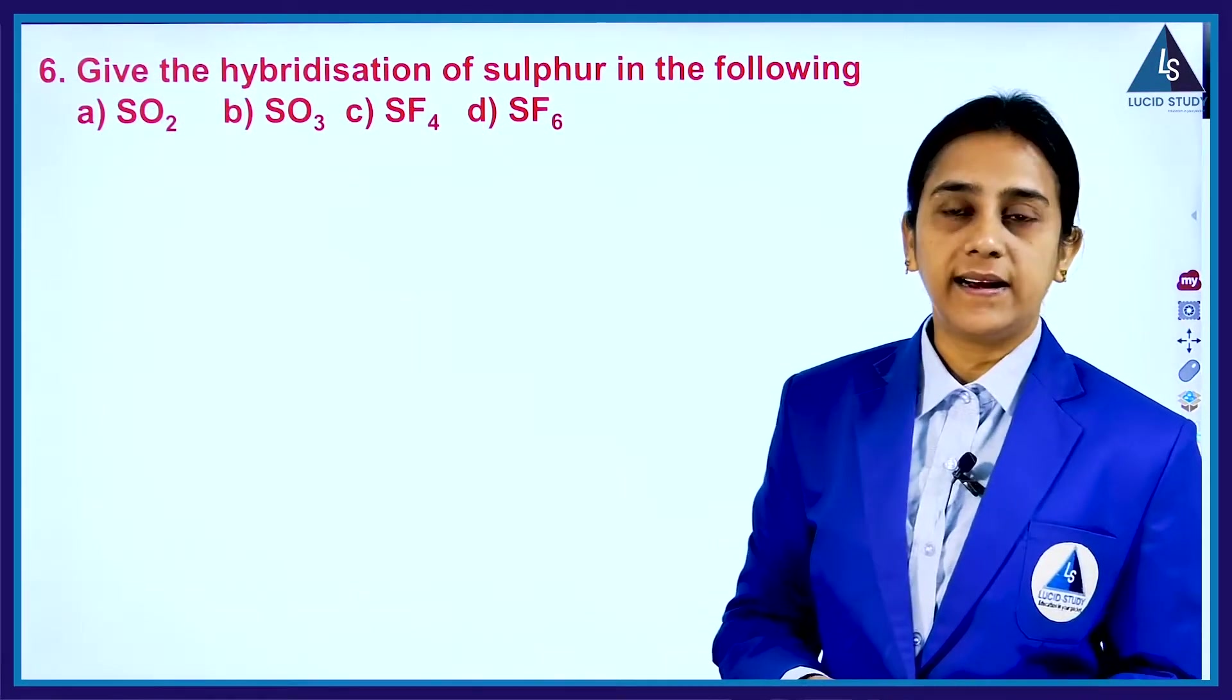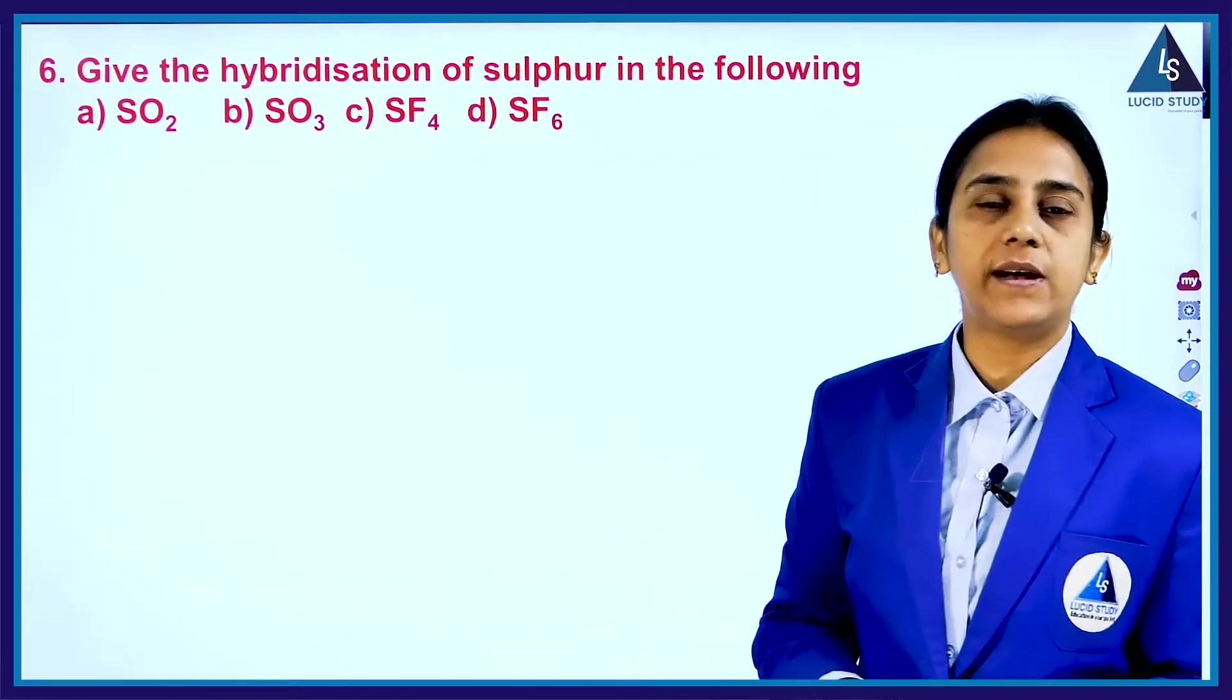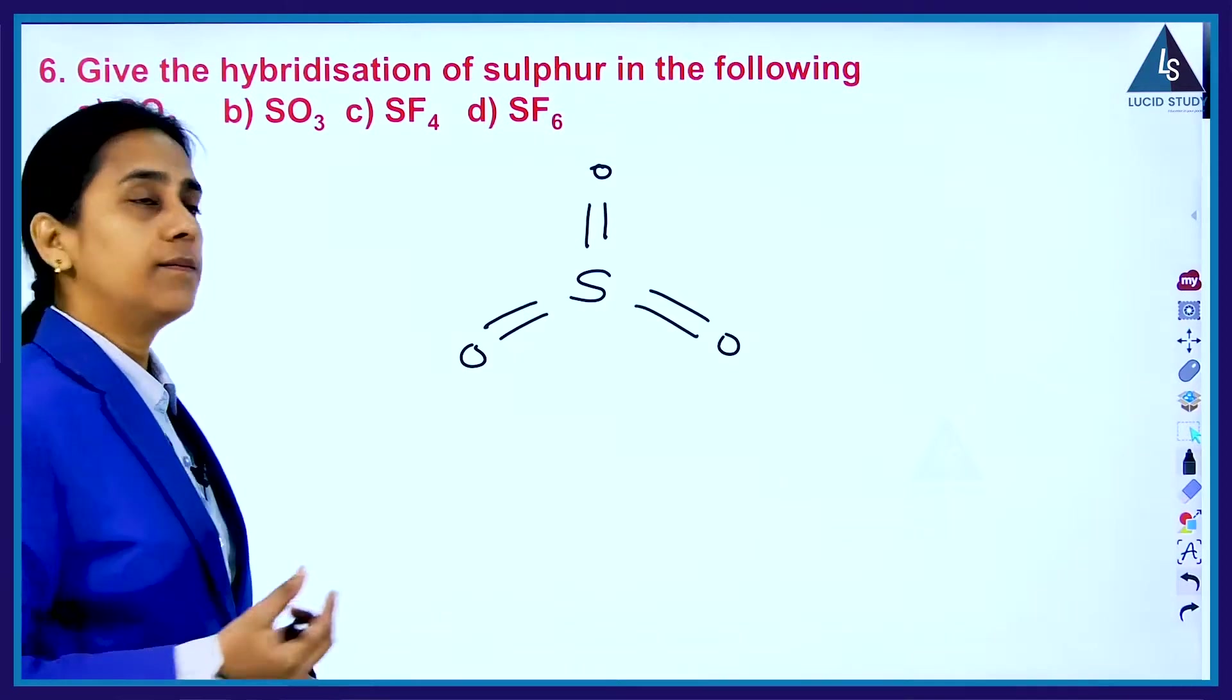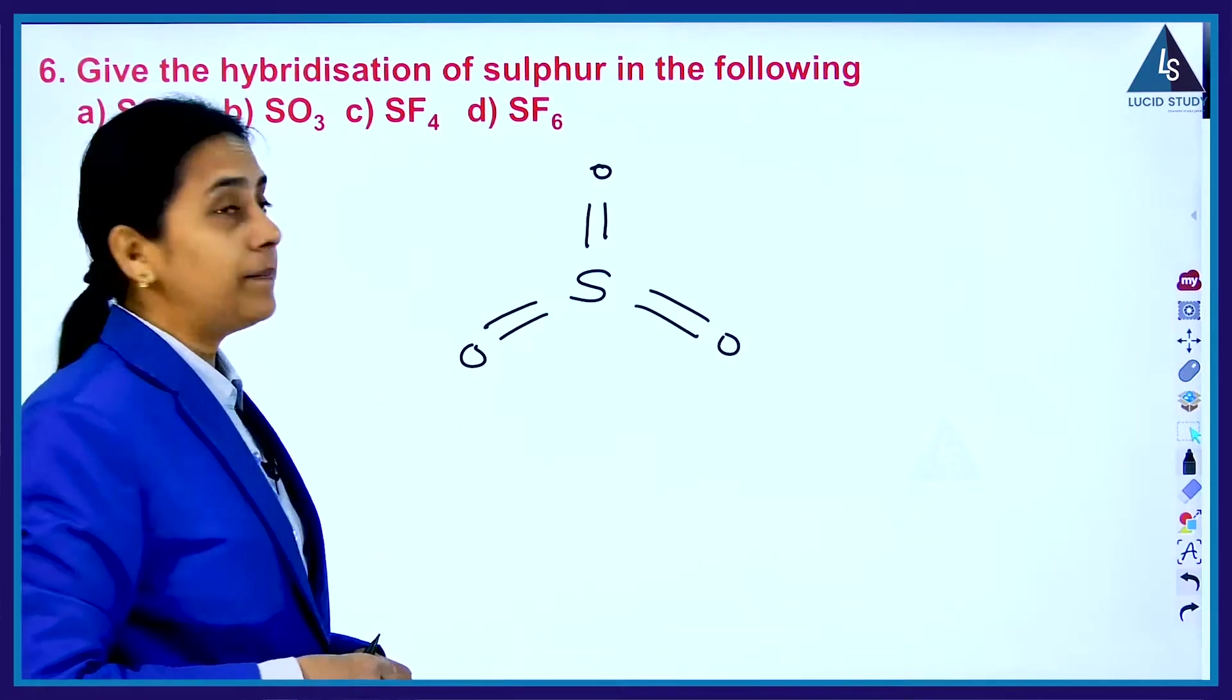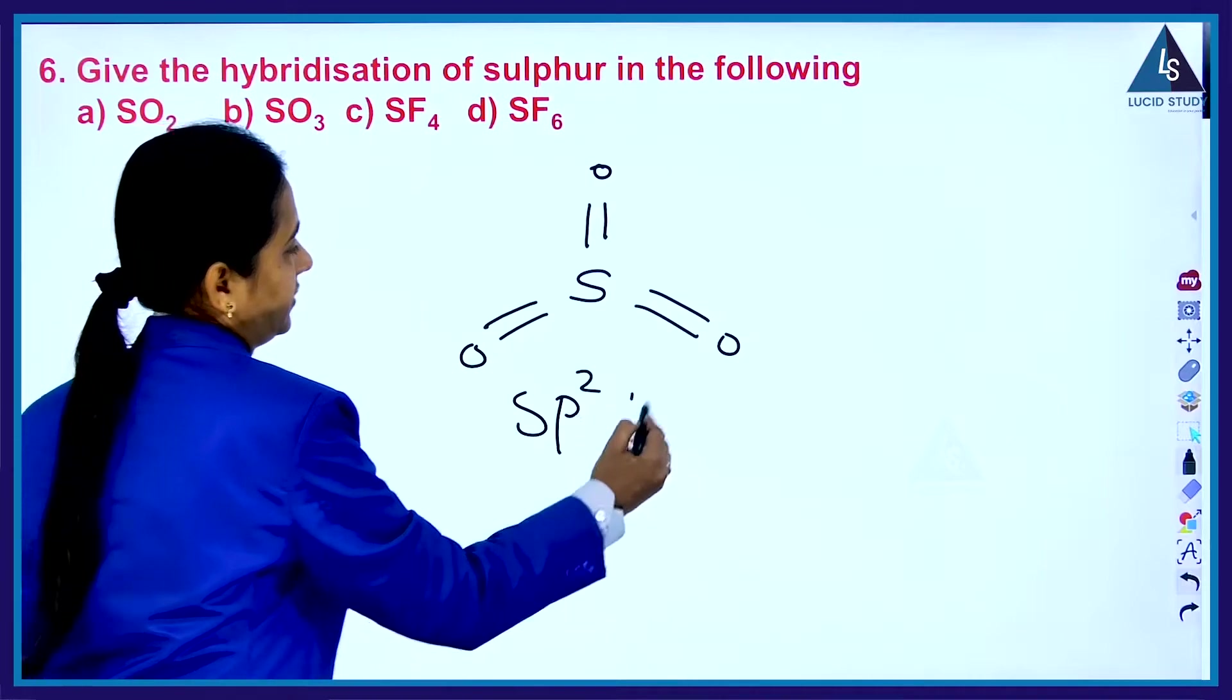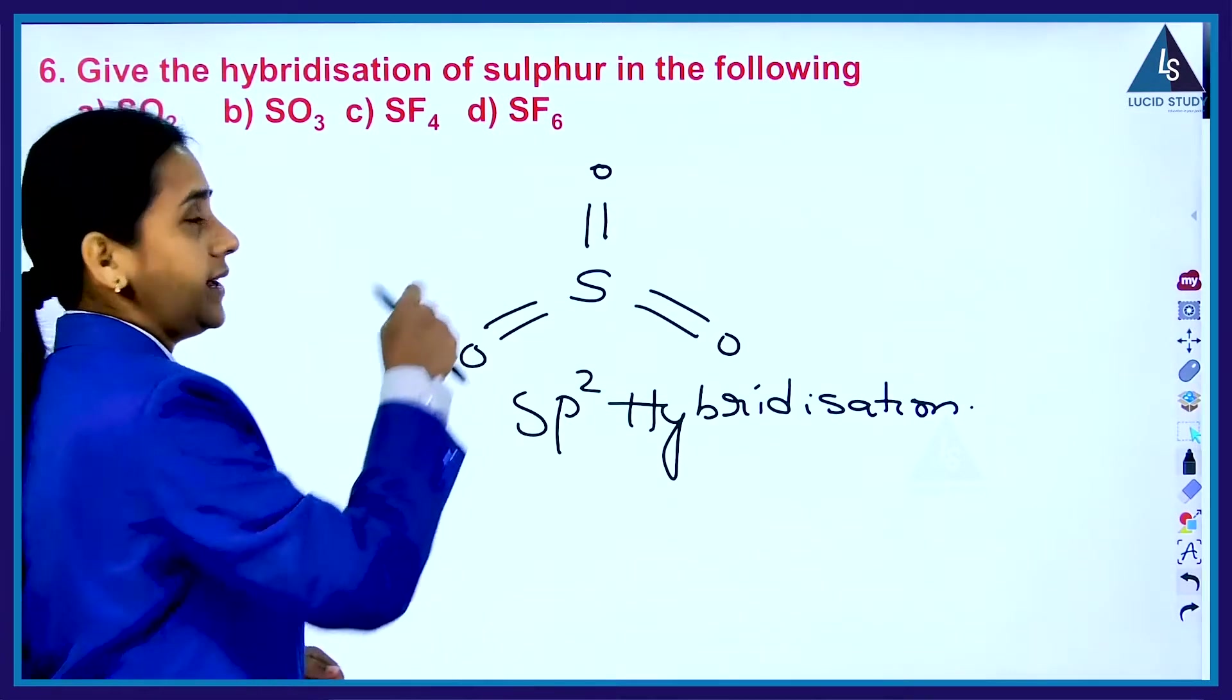Come to the next one, that is SO3, sulfur trioxide. Three oxygens are present now. Sulfur is a central atom. Three oxygens are bonded to the central atom in the triangular manner. Hence, even now a double bond is present, hence it's SP2 hybridization. The sulfur atom undergoes SP2 hybridization in the SO3 molecule.